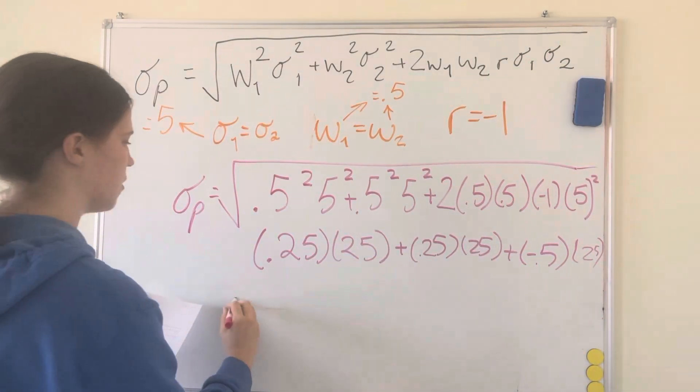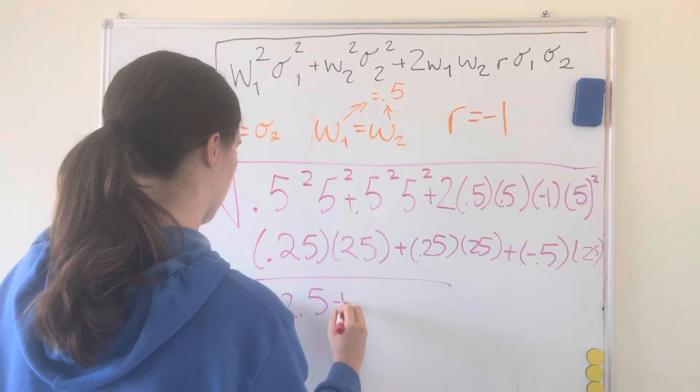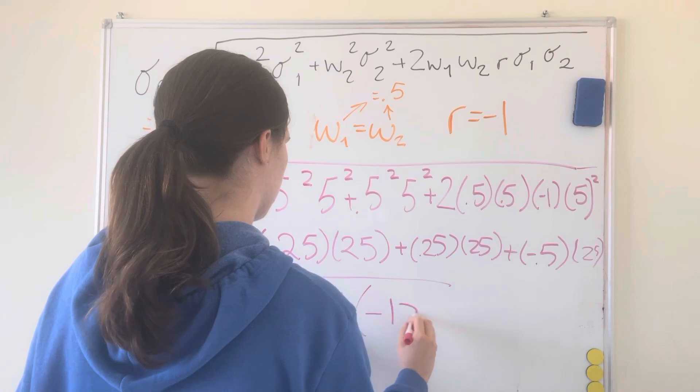And what this ends up giving us is 12.5, plus and then this is negative because our negative one being r, plus negative 12.5.